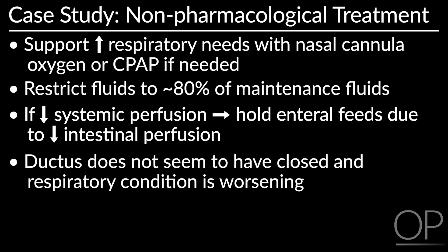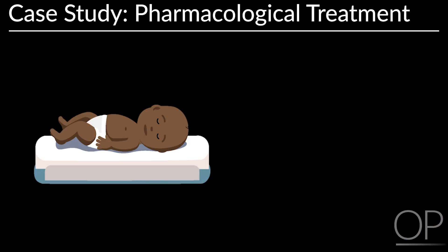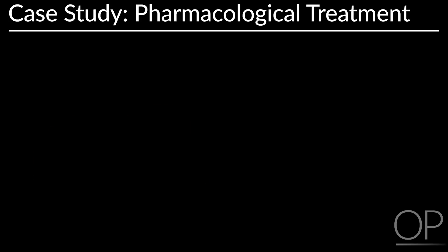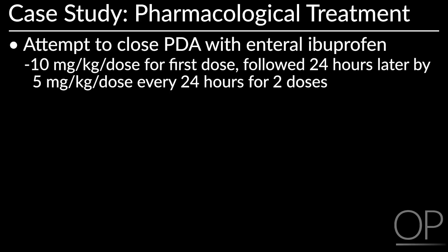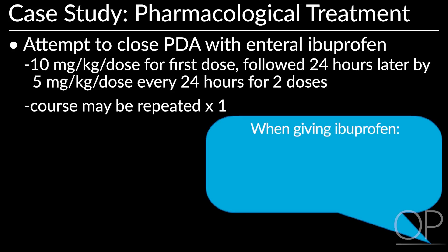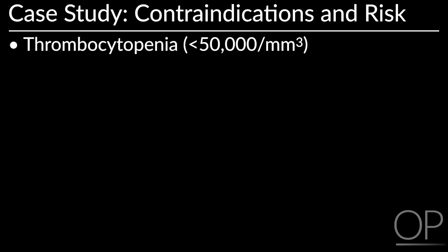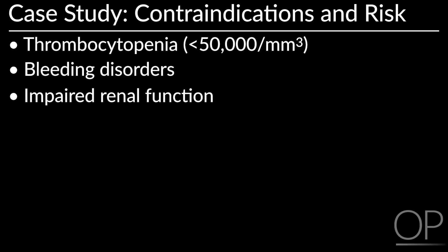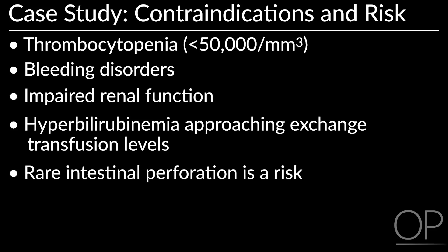After three days of non-pharmacological support, Jean-Claude's ductus does not appear to have closed by physical exam and his respiratory condition is worsening. Since he is a preterm newborn of less than 14 days of age, attempt to close the PDA with enteral ibuprofen: a first dose of 10 mg per kg, then 5 mg per kg doses every 24 hours for 2 more doses. This course of 3 doses may be repeated once. Contraindications include thrombocytopenia less than 50,000, bleeding disorders, impaired renal function, and hyperbilirubinemia approaching exchange transfusion levels. Rare intestinal perforation is one risk of this treatment.